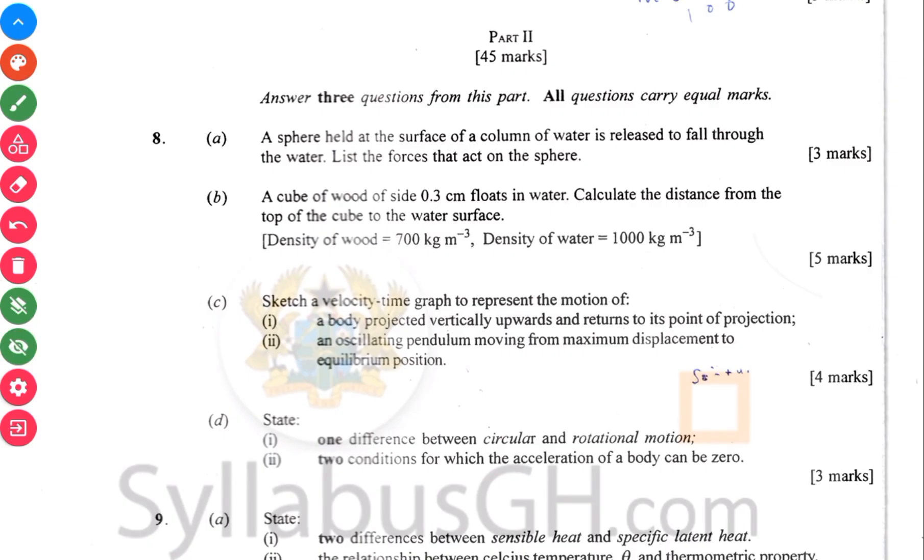Question 8 says that a sphere held at the surface of a column of water is released to fall through the water. List the forces that act on the sphere. So this one has to do with force. And question 8B has to do with density. We're given the density of the wood, density of water. If there's a cube of wood 0.3 cm through, then just find the distance.